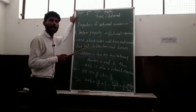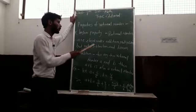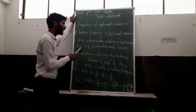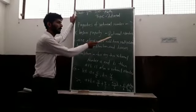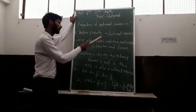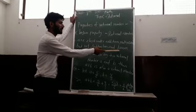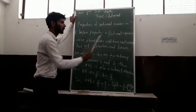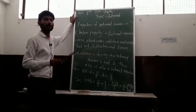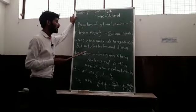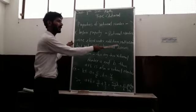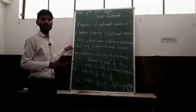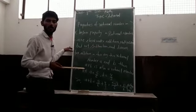But rational numbers are not closed under subtraction and division. If you subtract or divide two rational numbers, you may not get a rational number again.